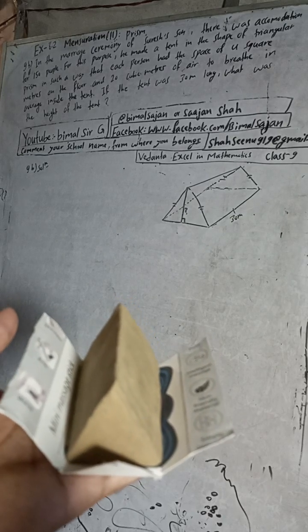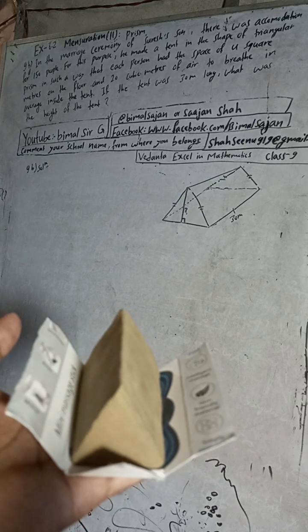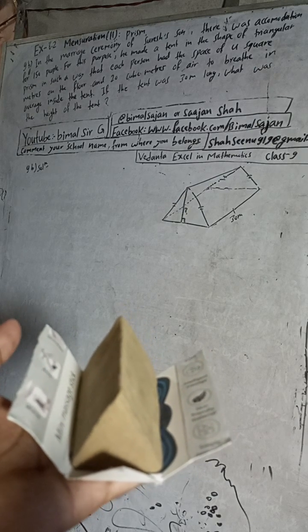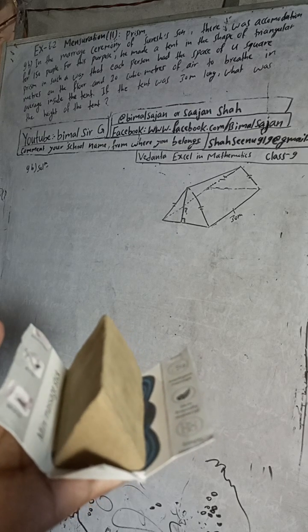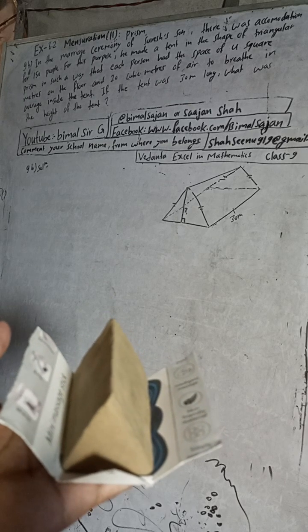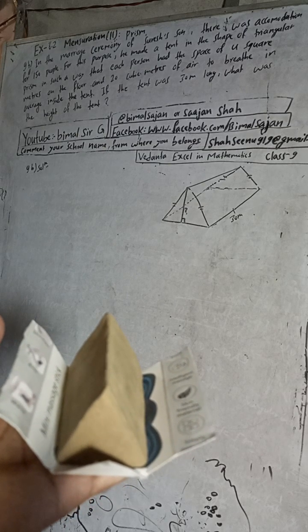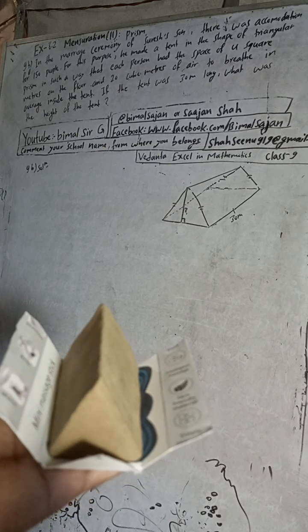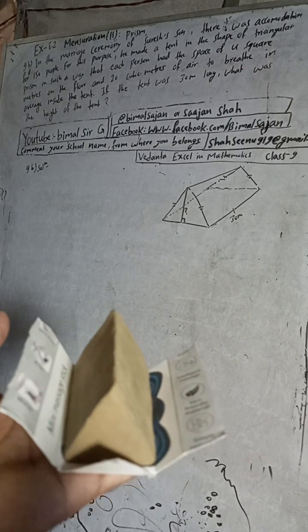Hi class 9 and 10 students, welcome back to Vimal Sarji YouTube channel. This is question number 9b, exercise 6.2, mensuration second part prism, Vedanta Excel in Mathematics class 9. The question is: In the marriage ceremony of Suresh's son, there was accommodation for 150 people. For this purpose, he made a tent in the shape of a triangular prism.